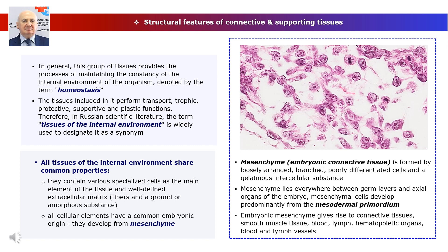Small mesenchyme cells with their processes form a meshwork and participate in the nutrition of all embryonic structures. Embryonic mesenchyme gives rise to the fibrous connective tissues, smooth muscle tissue, blood, lymph, hematopoietic organs, and blood and lymph vessels.